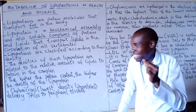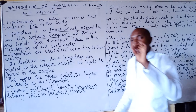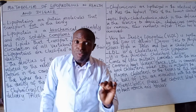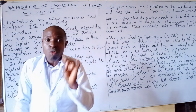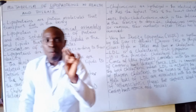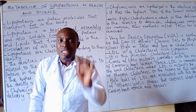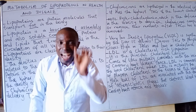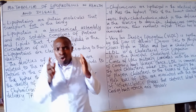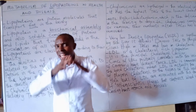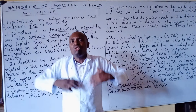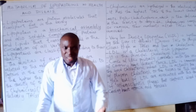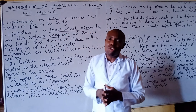The types of lipoproteins include: chylomicrons, VLDL (very low density lipoprotein), LDL (low density lipoprotein), IDL (intermediary density lipoprotein), and HDL (high density lipoprotein). We are going to discuss the functions of each of these lipoproteins and how they correlate in health and disease.